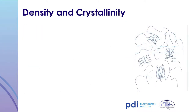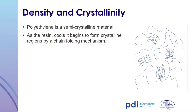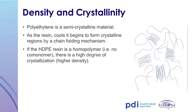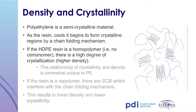Next, we'll discuss the relationship between density and crystallinity. Polyethylene is a semi-crystalline material, meaning it contains both amorphous non-crystalline content and crystalline content. Amorphous content can be compared to spaghetti noodles with long open chains, while crystalline content areas are more condensed. When polyethylene is heated, the crystalline areas break apart allowing the polymer to flow. As it cools, the crystalline areas reform. Homopolymers exhibit a high degree of crystallization and higher density, while increasing comonomer content results in more short-chain branching and lower crystallinity and density.